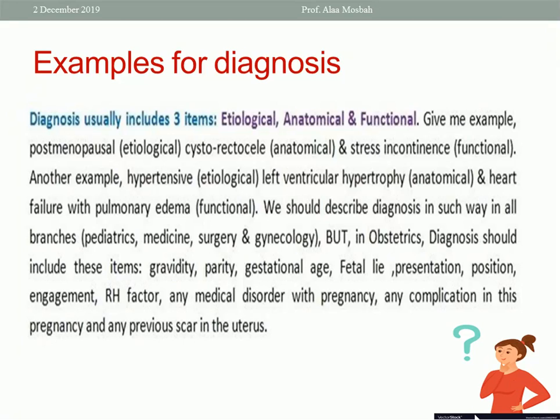Another example: rheumatic heart disease with mitral stenosis and heart failure. Which one is etiological? Rheumatic heart disease. Which one is anatomical? Mitral stenosis. Which one is functional? Heart failure or pulmonary edema. So these are the examples. But in obstetrics, it is a very special condition.